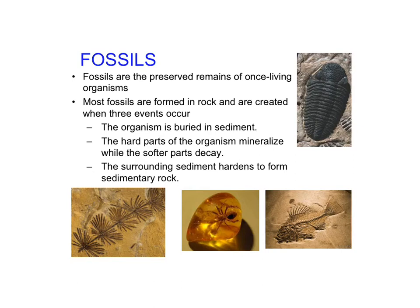Starting with fossils — our friend the trilobite — fossils by definition are the preserved remains of once-living organisms. So it's some kind of remnant from an organism that was once alive and is no longer alive. In most cases, they are formed in rock and are actually made of rock. A lot of people don't realize that fossils are rocks, but they are.